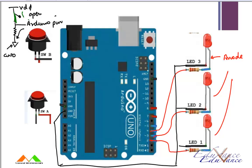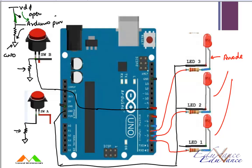So how would we connect that? You take the open side of the switch and connect it through a resistor to ground. You also connect the same terminal — since this is switch B — to pin number eight. The same goes for switch A: the open side goes to ground using a resistor, and the same terminal goes to pin number seven. Don't forget this resistor.